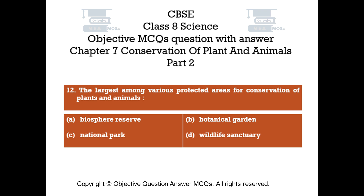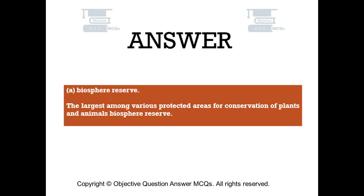Question number 12. The largest among various protected areas for conservation of plants and animals: Option A biosphere reserve, Option B Botanical garden, Option C national park, Option D wildlife sanctuary. The right answer is Option A — Biosphere reserve. The largest among various protected areas for conservation of plants and animals is the biosphere reserve.